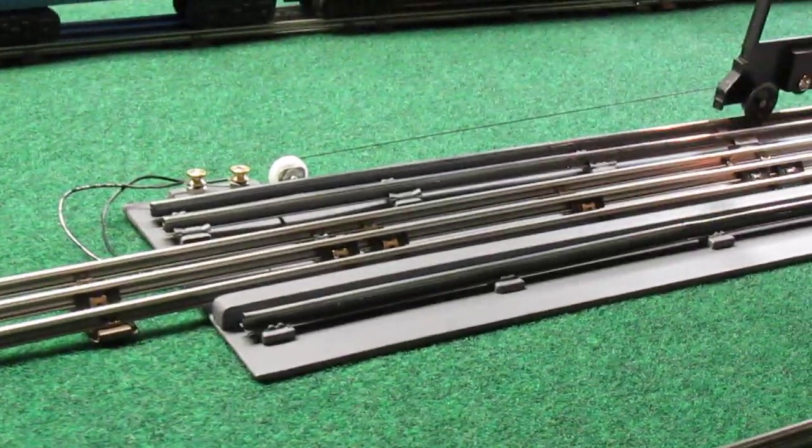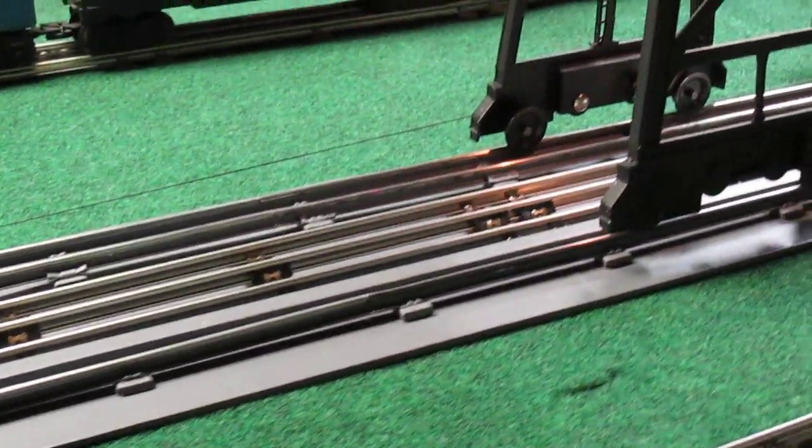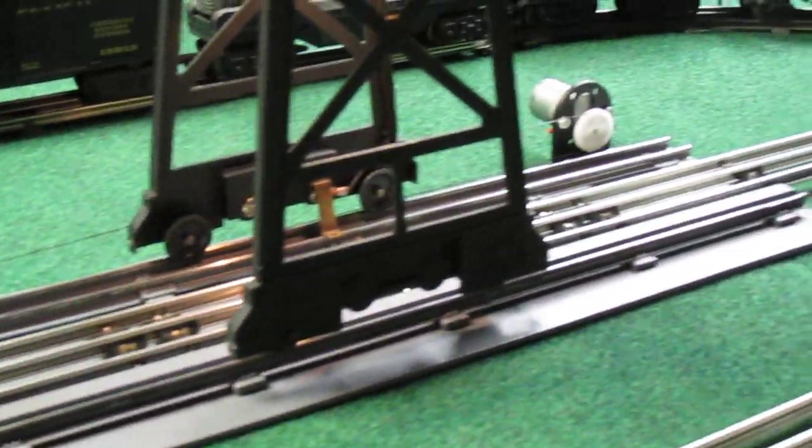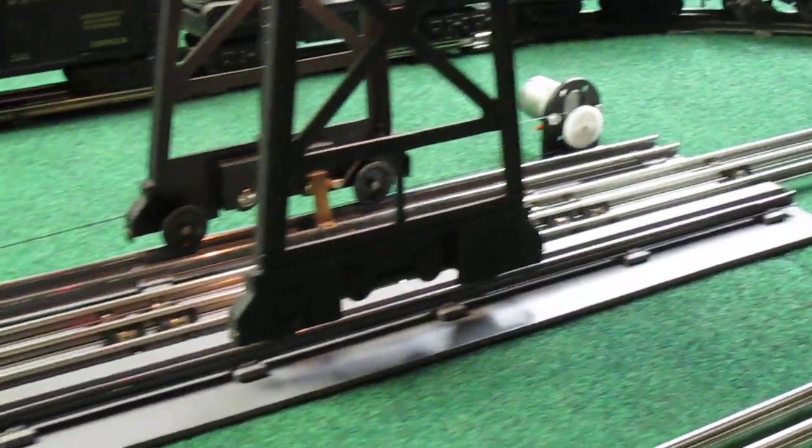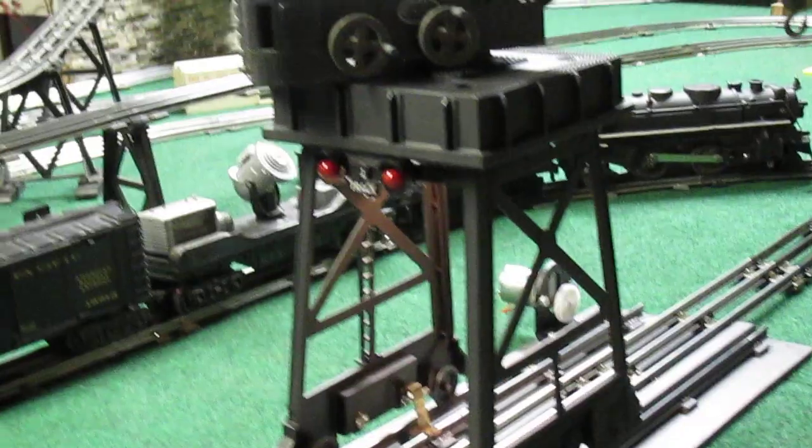A few months back I sent some pictures of this platform I built for my gantry crane. As you can see, it's on the layout now, but I took it a few steps further and added these blinking warning lights that I found in my junk pile. The power is coming from the rails.